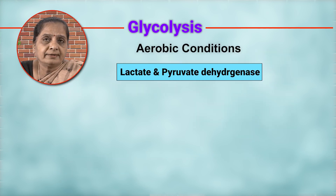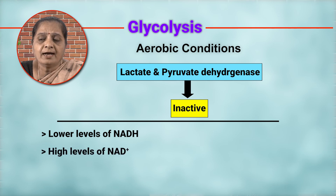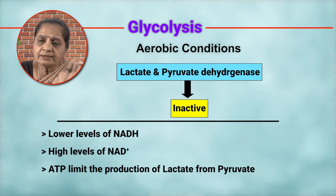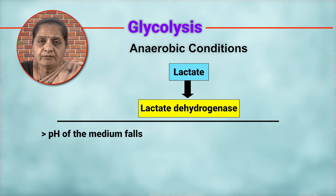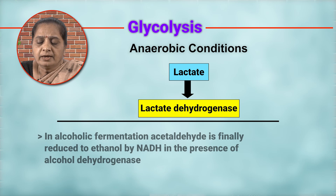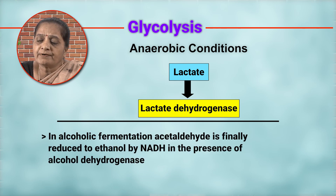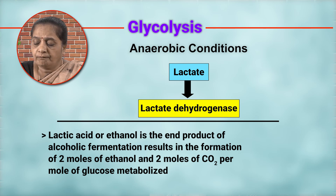In aerobic conditions, lactate and pyruvate dehydrogenase are inactive due to lower levels of NADH and high levels of NAD+ and ATP, which would limit the production of lactate from pyruvate. In anaerobic conditions, lactate is produced by means of lactate dehydrogenase, the pH of the medium falls, pyruvate decarboxylase then becomes active, and initiates the production of ethanol. In alcoholic fermentation, acetaldehyde is finally reduced to ethanol by NADH in the presence of alcohol dehydrogenase. Therefore, lactic acid or ethanol is the end product, resulting in the formation of 2 moles of ethanol and 2 moles of carbon dioxide per mole of glucose metabolized.